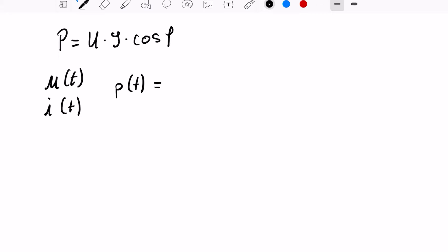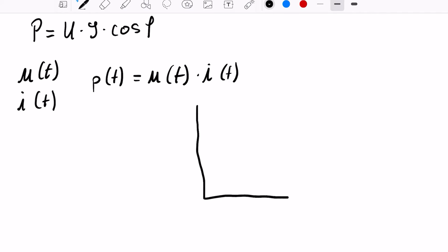Yeah, so this is just a multiplication between the voltage over time and the current over the time. And as a result, this is our instantaneous power.